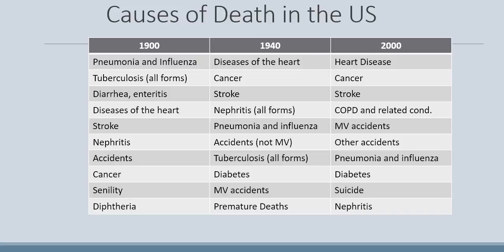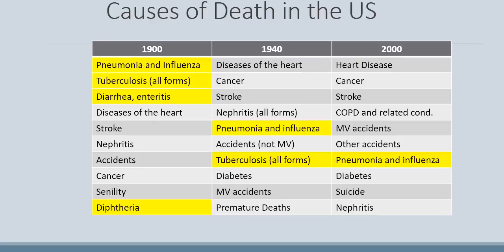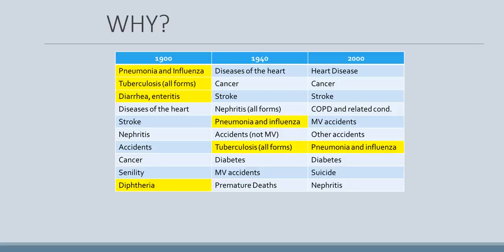Here is a list of causes of death in the United States in the early 1900s, 1940, and 2000. Take about 15 seconds to look at the charts and see if you notice anything different, unique, or intriguing. Most people immediately notice the changes from communicable diseases in 1900 to where they appear in 1940 and 2000 — communicable diseases moved down on the list and chronic diseases moved up. We need to ask ourselves why that occurred.